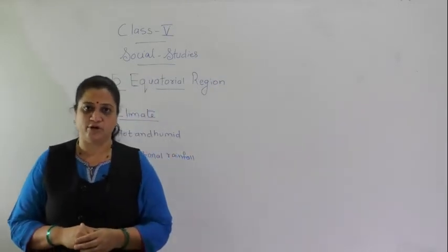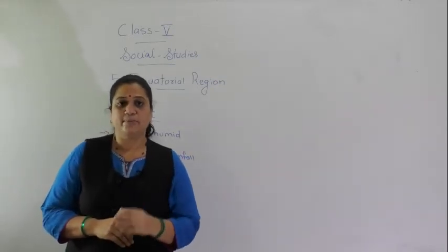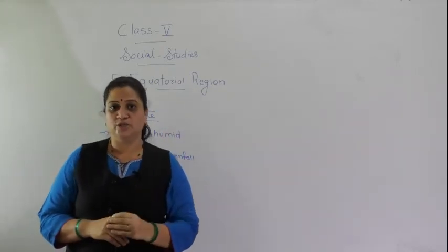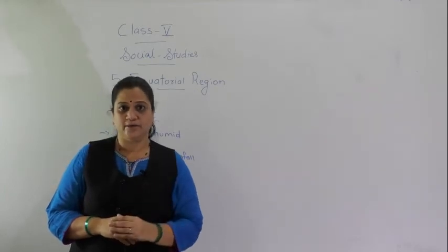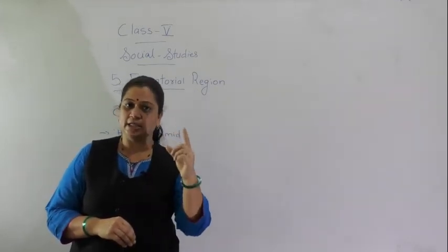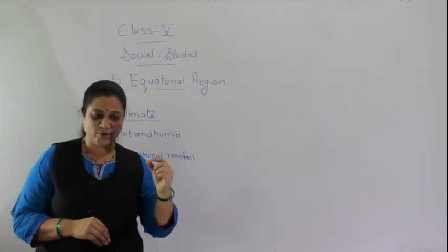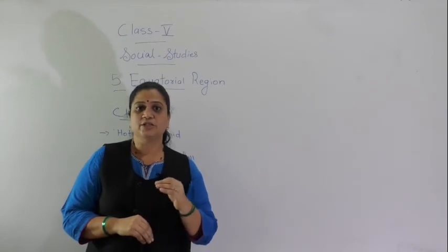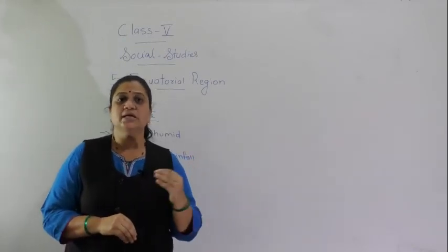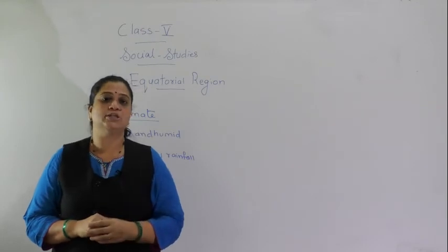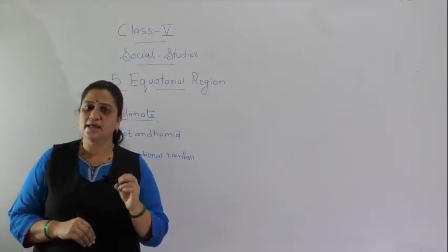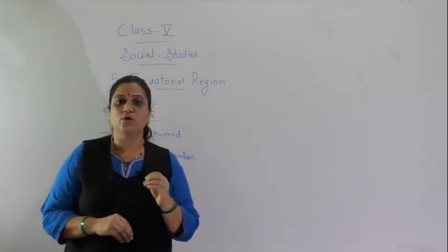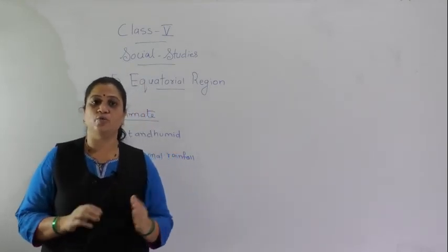So children, today we studied about the location and climate of the equatorial region. To recap: the equatorial region lies in the torrid zone, near the equator, between 0 degrees to 10 degrees in the northern hemisphere and 0 degrees to 10 degrees in the southern hemisphere. As the torrid zone receives vertical rays of the sun, the climate is hot and humid throughout the year.